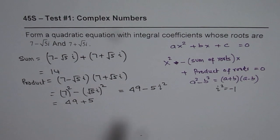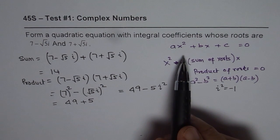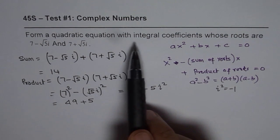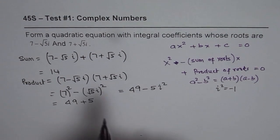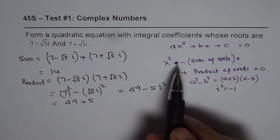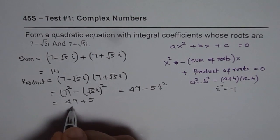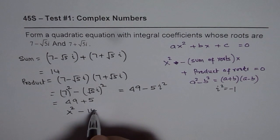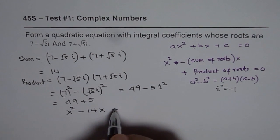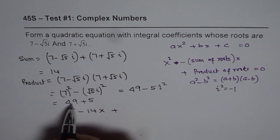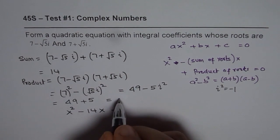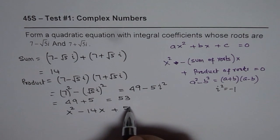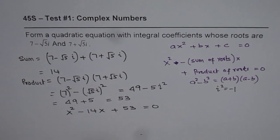So we know sum and product and now we can write down the quadratic equation. We need to write with integral coefficients. So the equation will be x square minus sum, which is 14 for us, minus 14x plus the product, which is 49 plus 5. Let us write this as 53 first. So it is 53 equals to 0. So that becomes our quadratic equation.